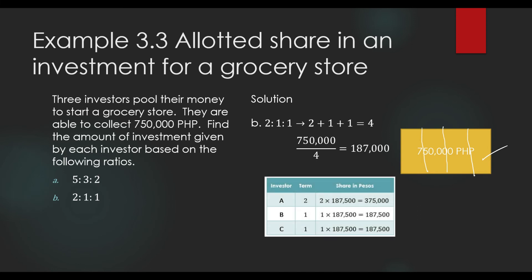This is the tabular representation of the solution. We have three investors, A, B, and C, with contributions based on the ratio 2 is to 1 is to 1. Investor A contributed two parts of the total investment: 2 times P187,500, which is equal to P375,000. Investor B contributed one part: 1 times P187,500. And so will investor C: 1 times P187,500.